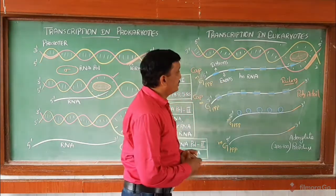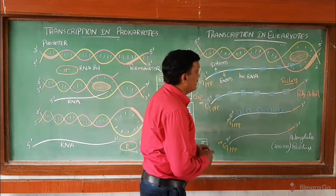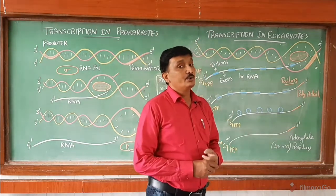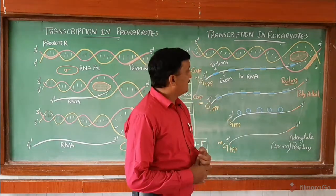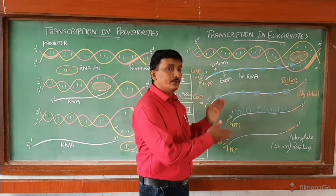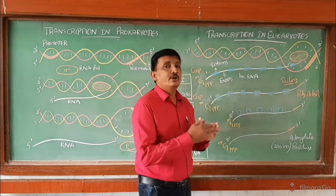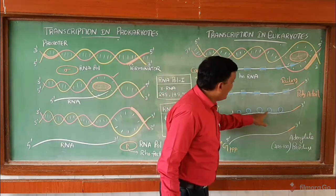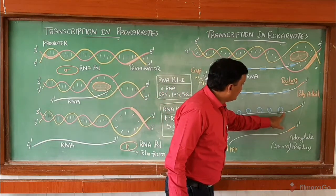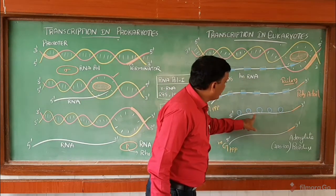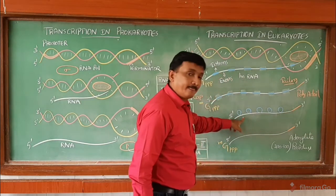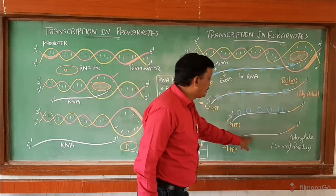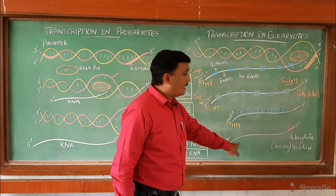This heterogeneous nuclear RNA undergoes splicing, a mechanism in which introns are removed and exons are joined together. After splicing, we can see a complete matured RNA.